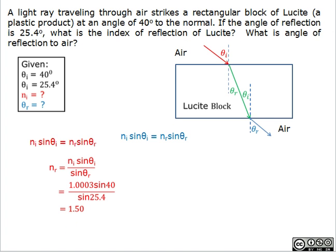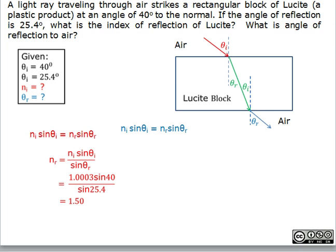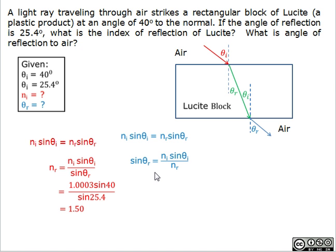Next, we need to calculate the angle of refraction in air. We're going to use the same formula, and we're going to change the formula into sine theta r equals n_i sine theta i over n_r. We substitute the values into the formula, and the result that we get is 0.643.